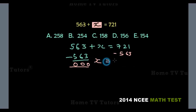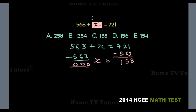We are left with 1 in the second column. 1 minus 6 is not possible, so we borrow 1 from 7, giving us 11 minus 6, which gives us 5. Then in the last column, we are left with 6 since we borrowed 1 from there previously. 6 minus 5 gives us 1. So the unknown number is 158. The answer option C is the right answer.